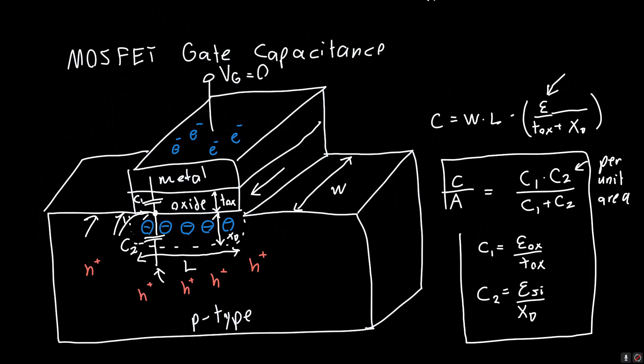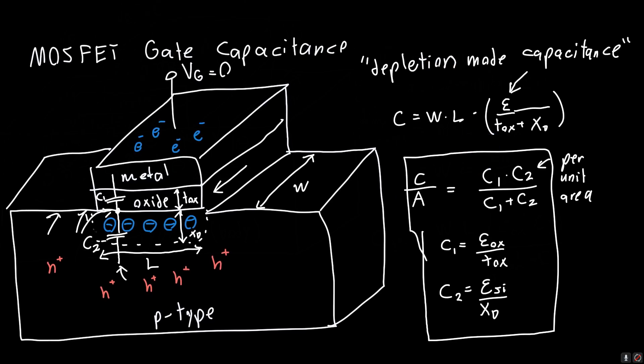That's the capacitance when we are in, this is called the depletion mode, or depletion region capacitance. And we have to keep in mind that this XD, this depletion region, this is a function of voltage. So this is a function of the voltage that we apply to the gate. So as we increase the voltage, this depletion region gets larger and larger. So there's more ions within this depletion region. The capacitance is going to decrease because we have more separation between the charges.